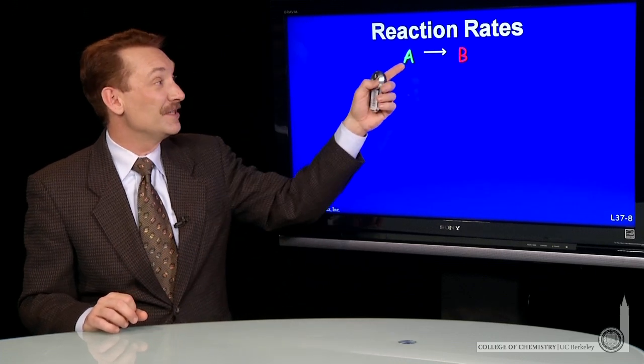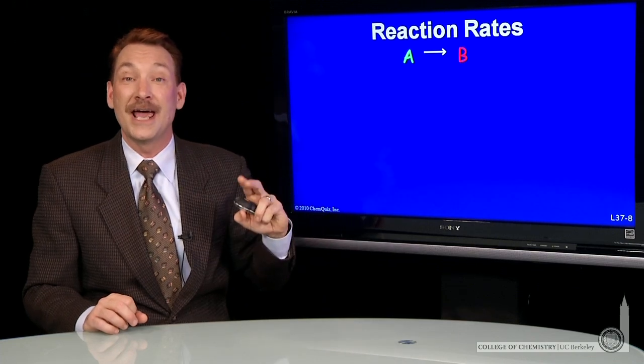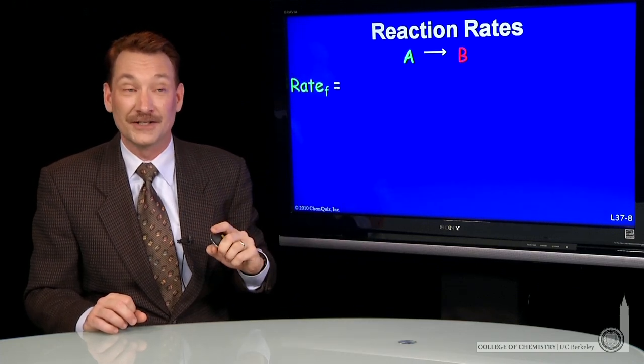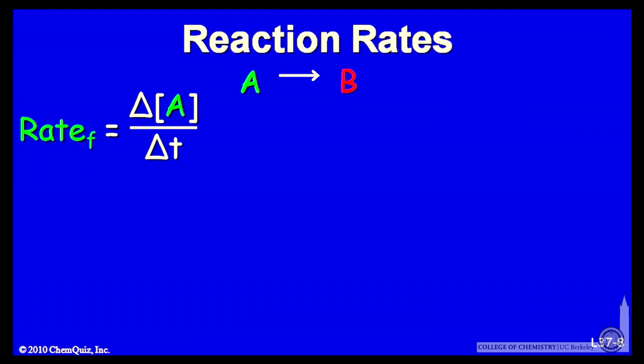So that means this is a first order chemical reaction. And I can write the rate for the forward reaction as the change in concentration of A over a given change in time, and that will be Kf times the A concentration, first order in A for the forward direction.